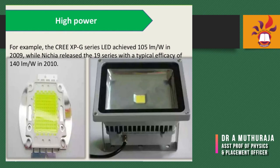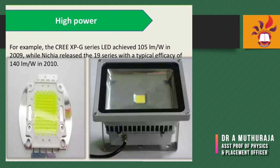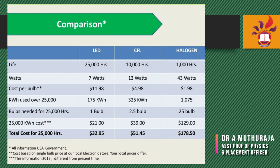For high power LEDs, for example the Cree XPG series achieved 1.5 lumens per watt in 2009 when first introduced. The XP-G series typically achieved 140 lumens per watt in 2010. These are comparisons for LED, CFL, and halogen lighting, showing high power LEDs rapidly improving over those years.